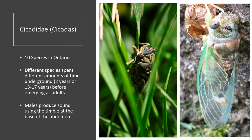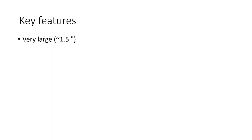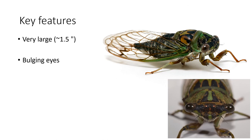Cicadidae, aka cicadas — you've probably heard cicadas on a hot summer day. There are 10 species in Ontario. Different species spend different amounts of time underground — either two years or 13 to 17 years before emerging as adults. Males produce sound using the timbal at the base of their abdomen. Key features: they are very large, roughly 1.5 inches, they have bulging eyes, and they leave behind nymph exoskeletons.